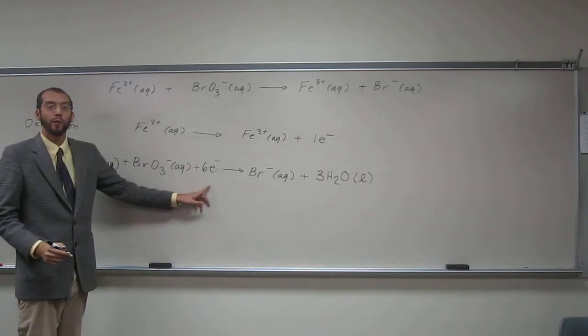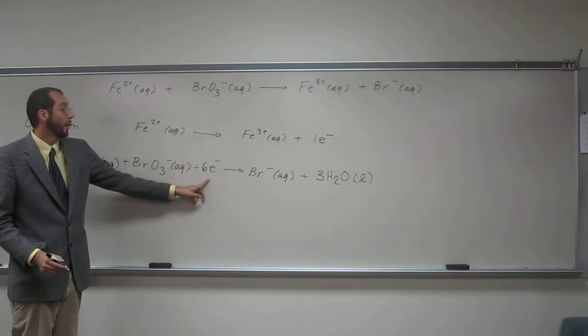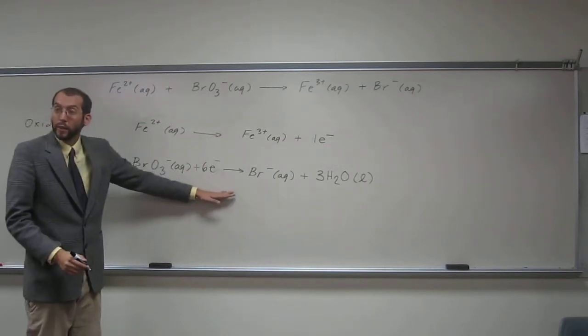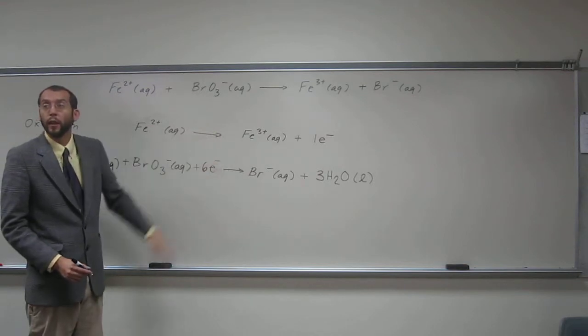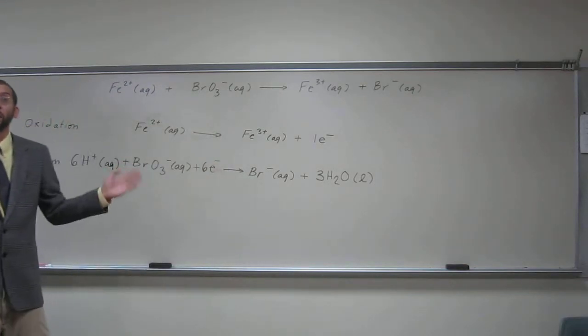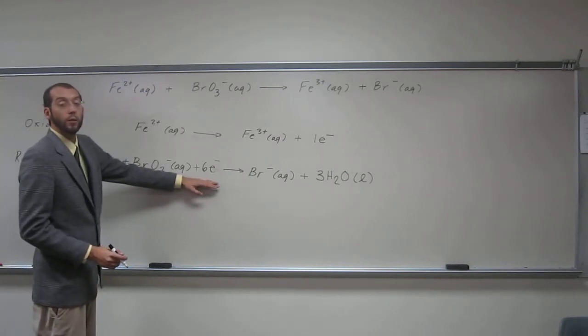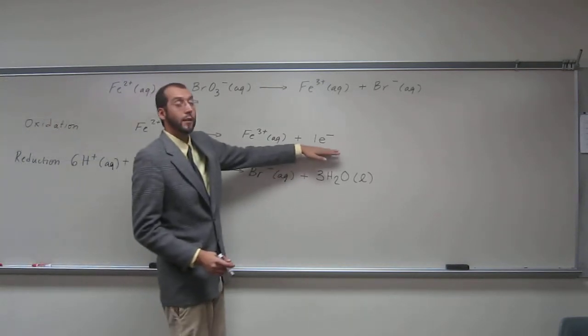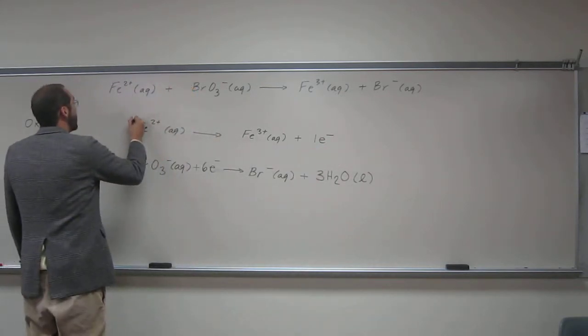So now recall the last portion, we have to make sure the same number of electrons here is in, that's in this half reaction is in this half reaction. And in order to do that, we have to multiply all our coefficients by the same number. So we have 6 electrons transferred here, so we have to get 6 electrons to be transferred here. So how do we do that?